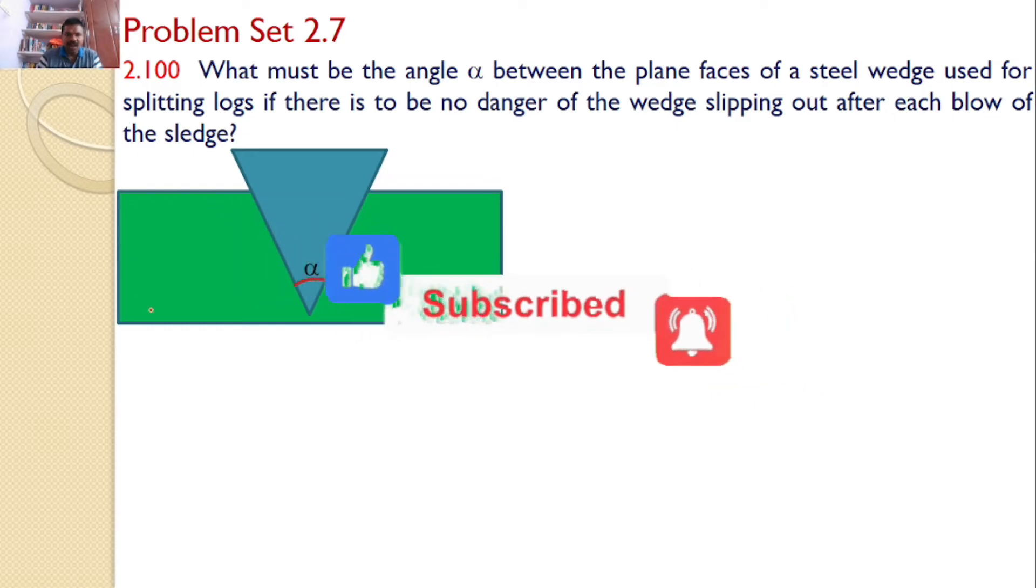That means there is a log. This log is to be split into two halves by using a wedge. The interest is to find the angle alpha.